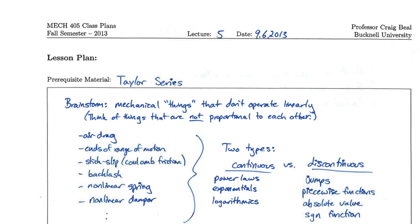Lots of systems in the real world are not linear. For a linear system, one variable is proportional to another variable. But there are a lot of things in the mechanical world — and the world in general — that don't operate that way.